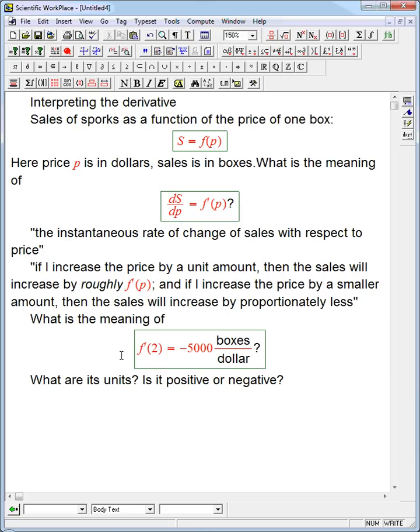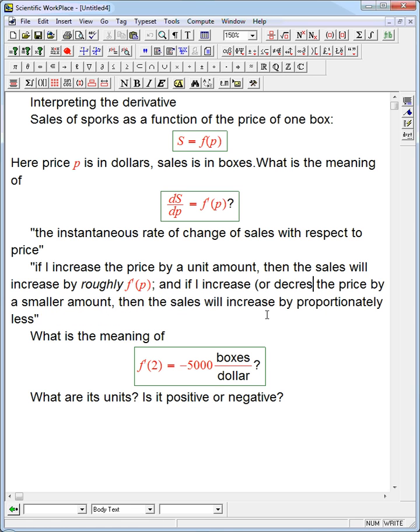So what's the meaning? Suppose I knew that f prime of 2 was negative 5,000 boxes per dollar. And this negative is going to be important because I said increase and increase here. You might get the impression that that means always I actually do get an increase. But let's say, or decrease if the derivative is negative.